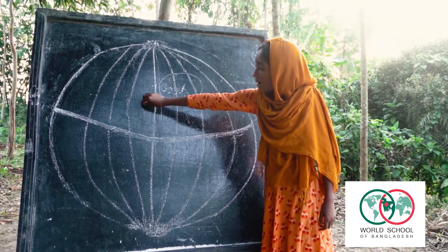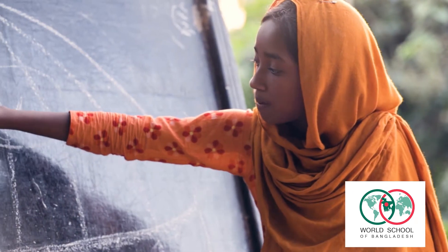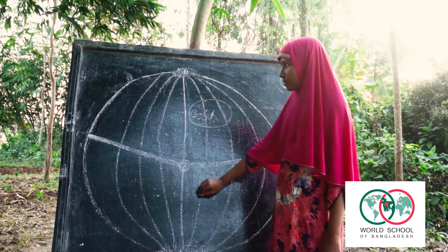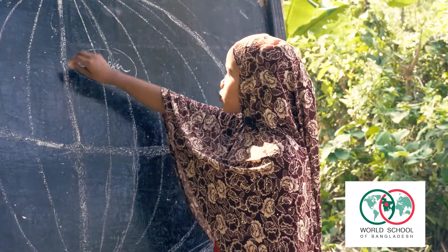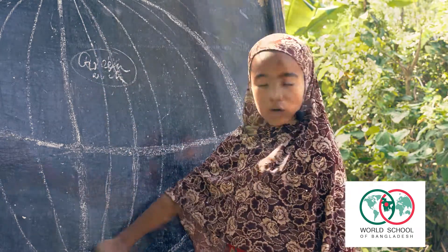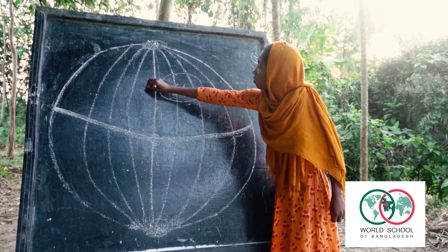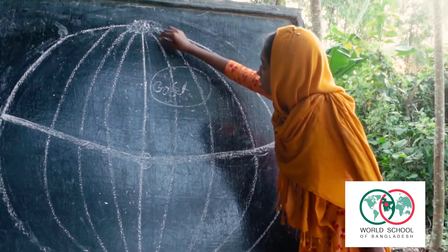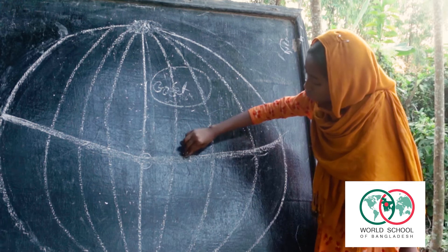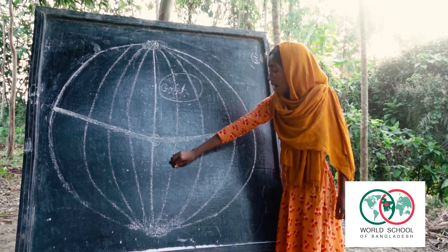The upper half is called the North Hemisphere. The lower half is called the South Hemisphere. The longitude from North Pole to South Pole is called a Meridian. The Meridian goes from North Pole to Greenwich to South Pole. It's called the Prime Meridian.